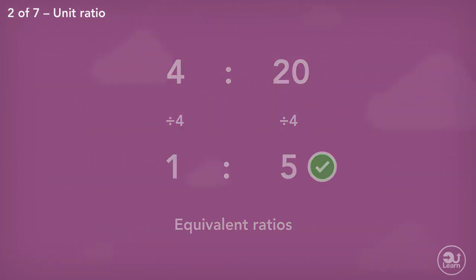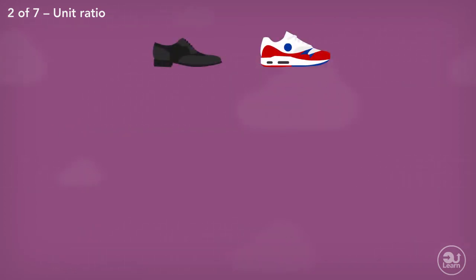Here's another unit ratio example. Chima owns some shoes. The ratio of smart shoes to trainers is one to six. Chima owns 18 trainers. How many smart shoes does he own?